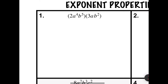Problem number one says 2a to the 4th b to the 5th times 3ab squared. Since this is multiplication, I'm going to use the product property. The product property for exponents says exponents with the same base, when you multiply them, you add the exponents together. So let's take it part by part. 2 times 3, since those are regular numbers, has always been and will forever be 6.